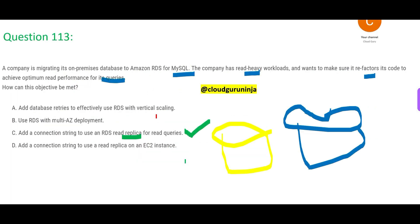Write performance means you have vertical scaling here, but vertical scaling is absolutely not the right approach because you cannot keep increasing your database size — that will not help you with read loads. Option B is saying you use multi-AZ deployment. Multi-AZ deployment we use for disaster scenarios: if one environment goes down, the other environment will be up. And option D is talking about adding a connection to a read replica of an EC2 instance. Why would we create a read replica on EC2? We create it as an RDS read replica and avoid spending money on additional EC2 instance cost. That's why D is wrong. So C is our final answer.